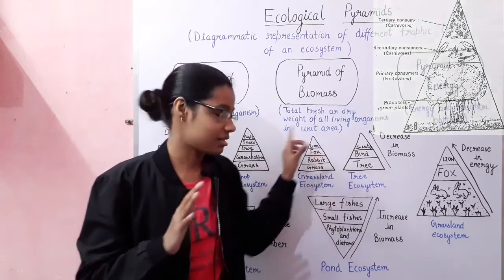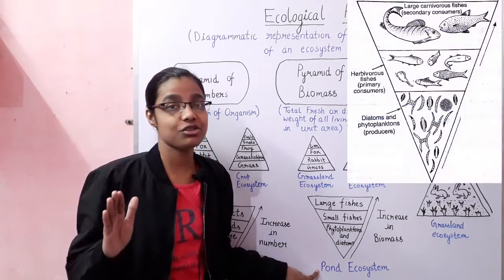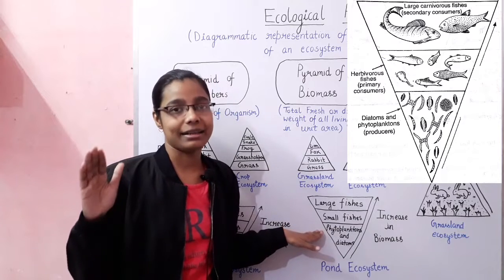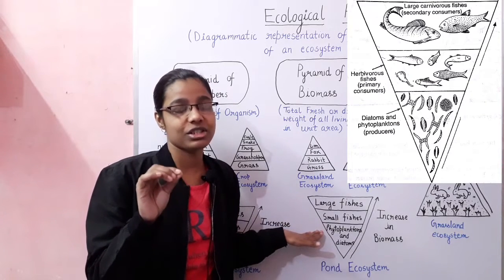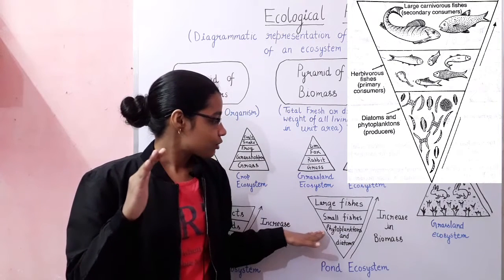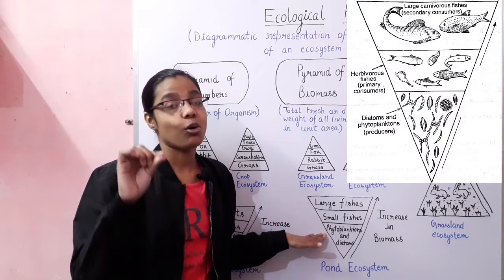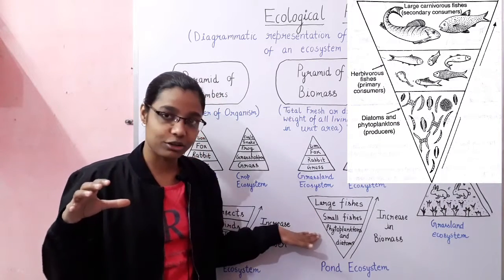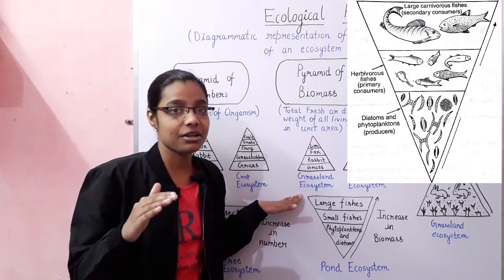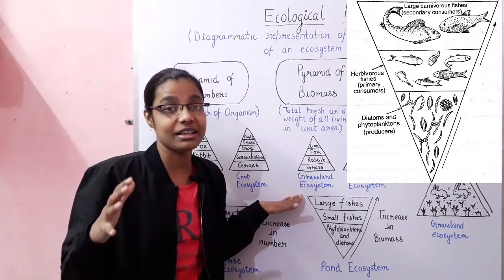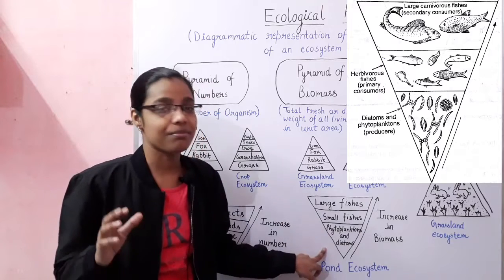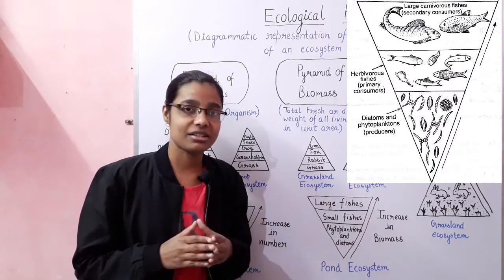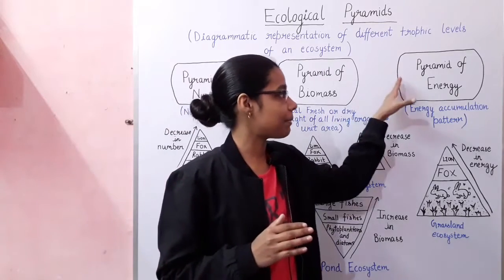The pond ecosystem shows an inverted pyramid of biomass. The producers are phytoplanktons and diatoms — very small microscopic structures with very little biomass. The fishes that feed on phytoplanktons have more biomass, and the large fishes at the top have the highest biomass or weight. That is why this pyramid is inverted — biomass increases as you move upward through the trophic levels.